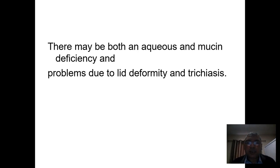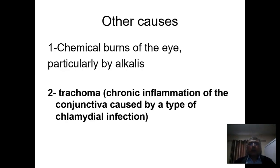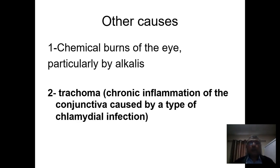As a result of this fibrosis of the conjunctival sac, there will also be aqueous deficiency. Fibrosis of the lids may be associated with lid deformities and trichiasis. Other causes that may produce a similar picture to Stevens-Johnson syndrome include: chemical burns, particularly with alkalis, which produce damage of the conjunctival tissue, damage of the goblet cells, and loss of mucin; and trachoma, which is a chronic inflammation of the conjunctiva with Chlamydia trachomatis, resulting in fibrosis of the conjunctiva, damage of the goblet cells, and dry eye.